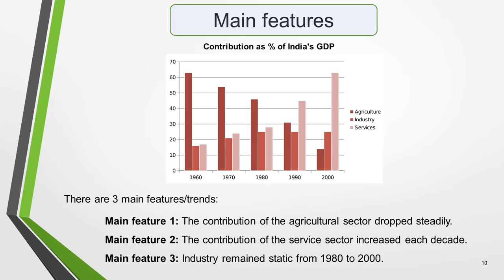So what main features stand out in our practice graphic? Here it is again. There are three main features or trends in this bar chart. Main feature one: the contribution of the agricultural sector dropped steadily. Main feature two: the contribution of the service sector increased each decade. Main feature three: industry remained static from 1980 to 2000. The general trends you select will be the starting point for your essay — you will then go on to add more detail. With just 20 minutes allowed for the task and a requirement of only 150 words, you won't be able to include much detail.